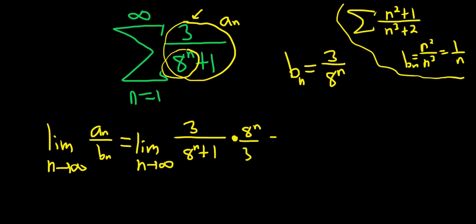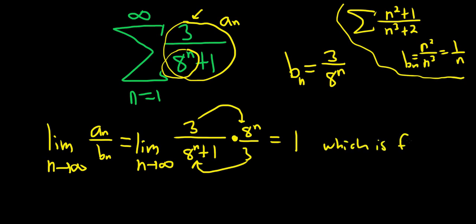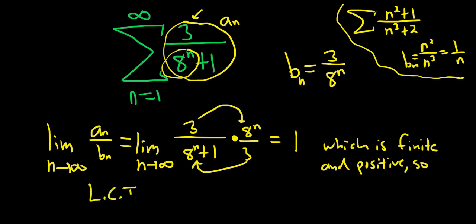You see this limit is just going to be one, because it's three times eight to the n over three times eight to the n. The growth rates are exactly the same, which is finite and positive — that's the hypothesis, that's one of the criteria for the limit comparison test. So LCT applies.